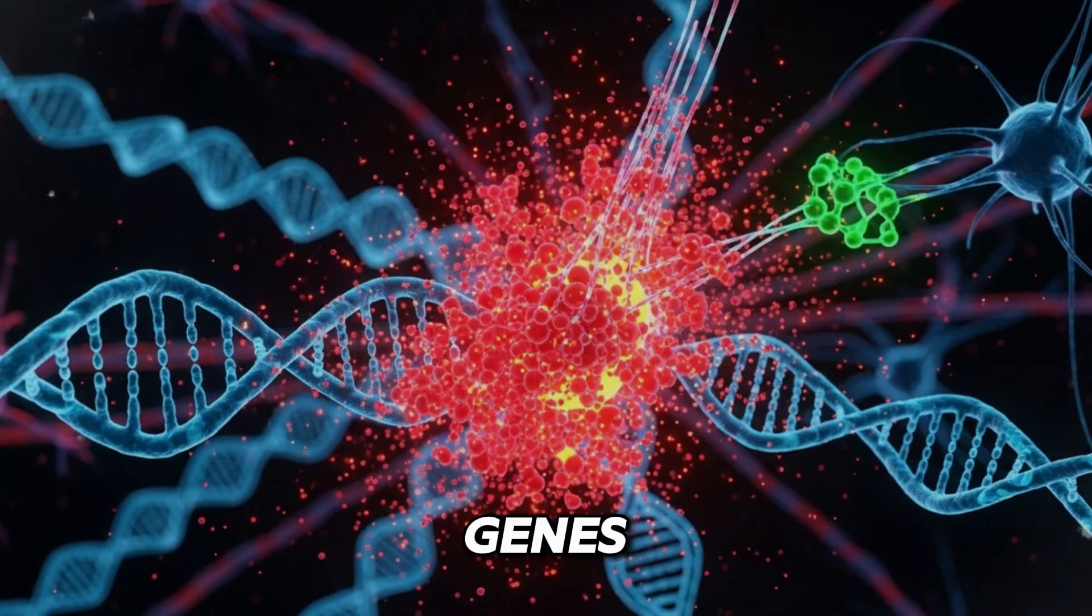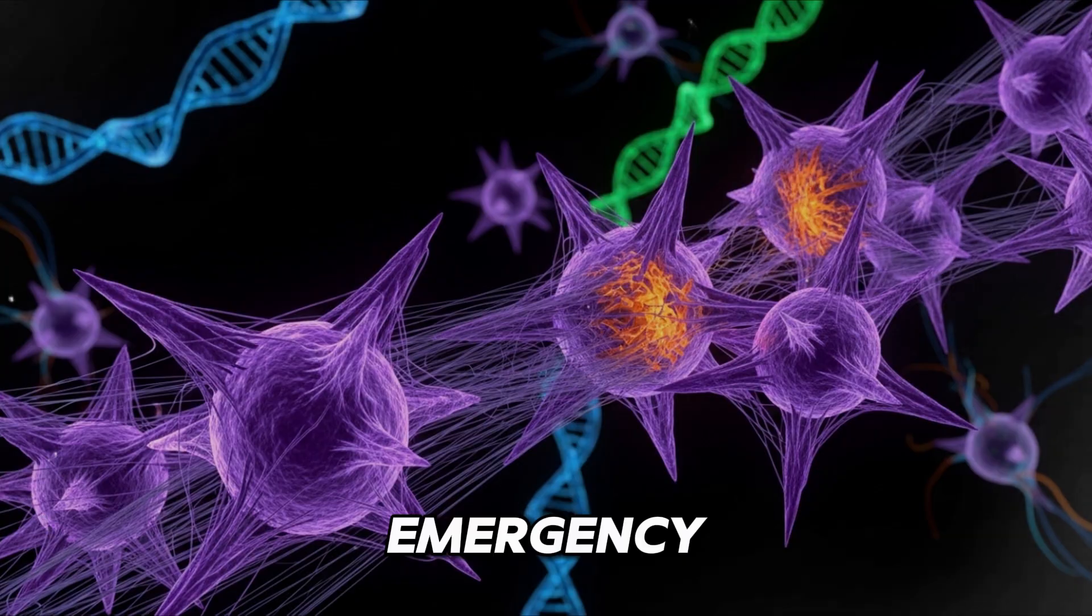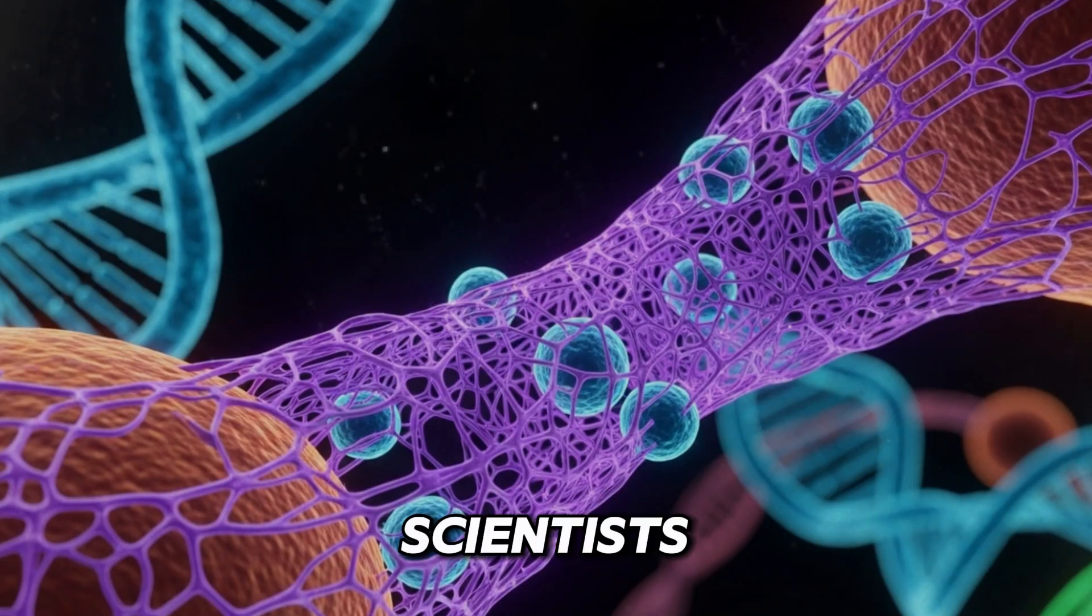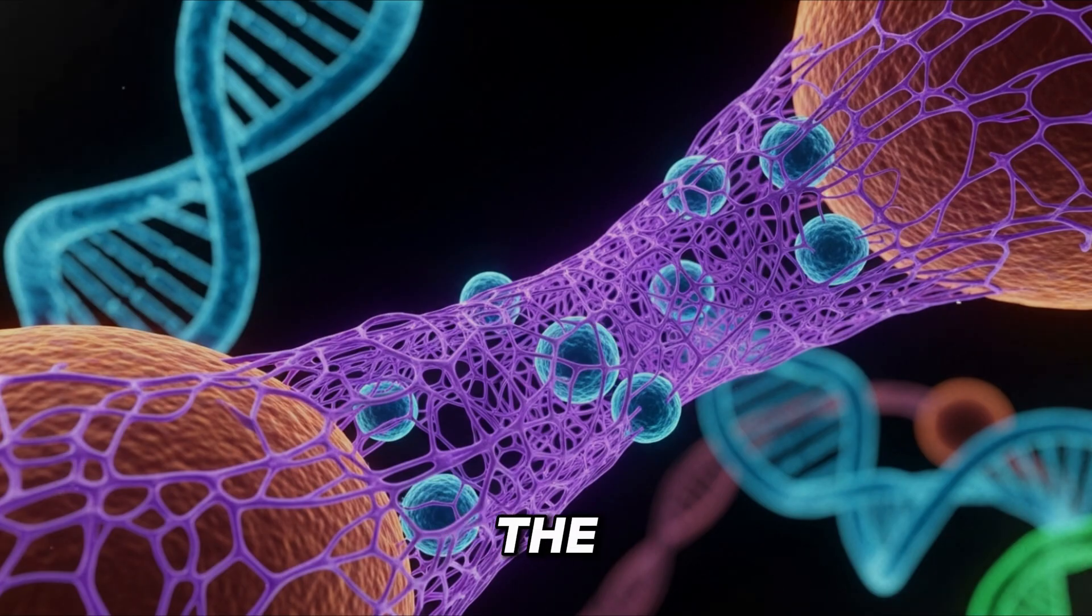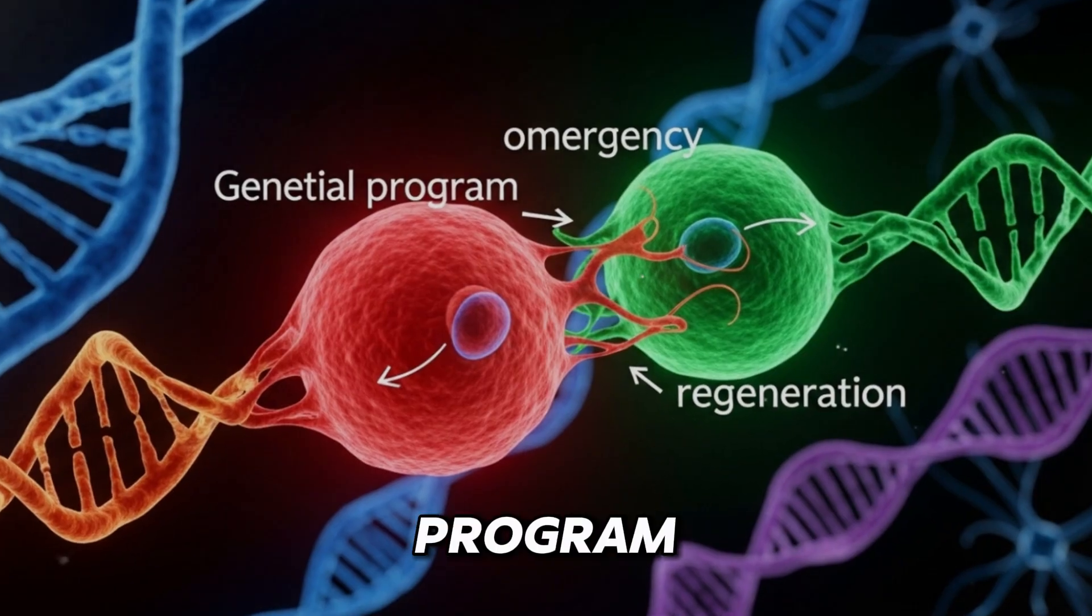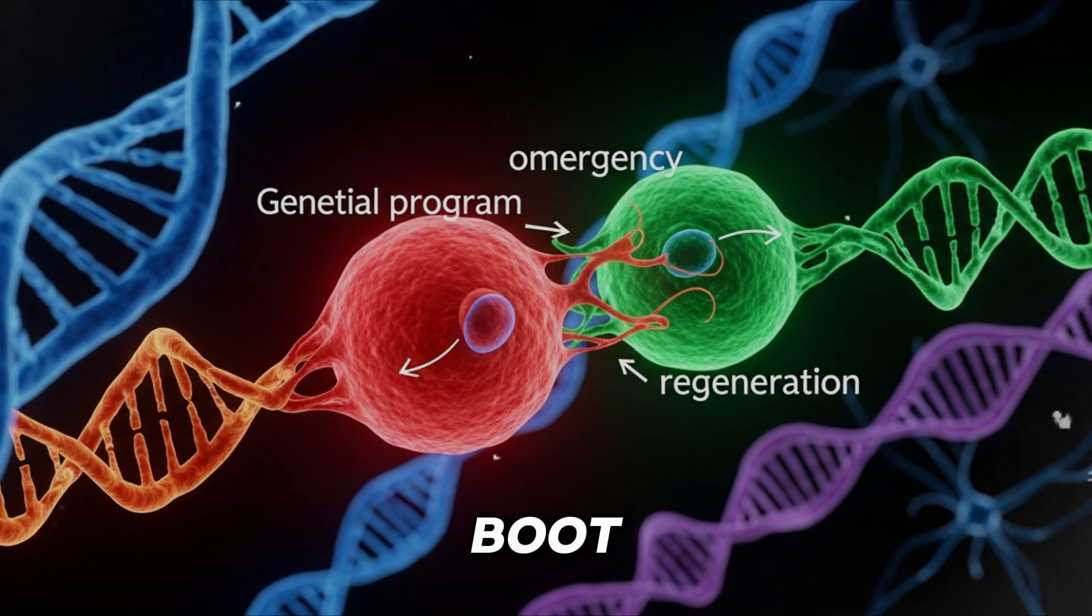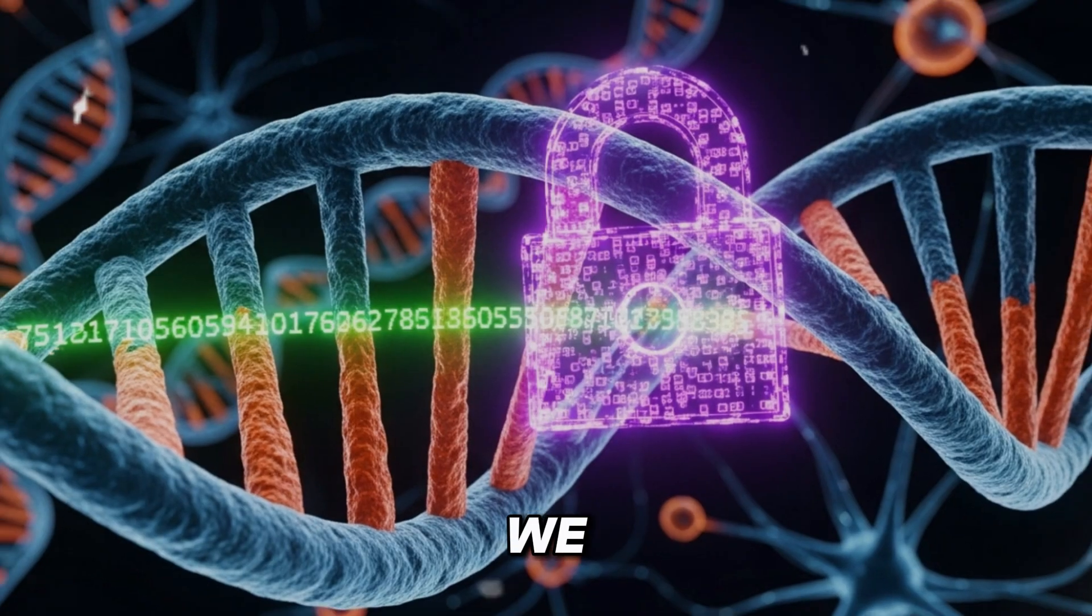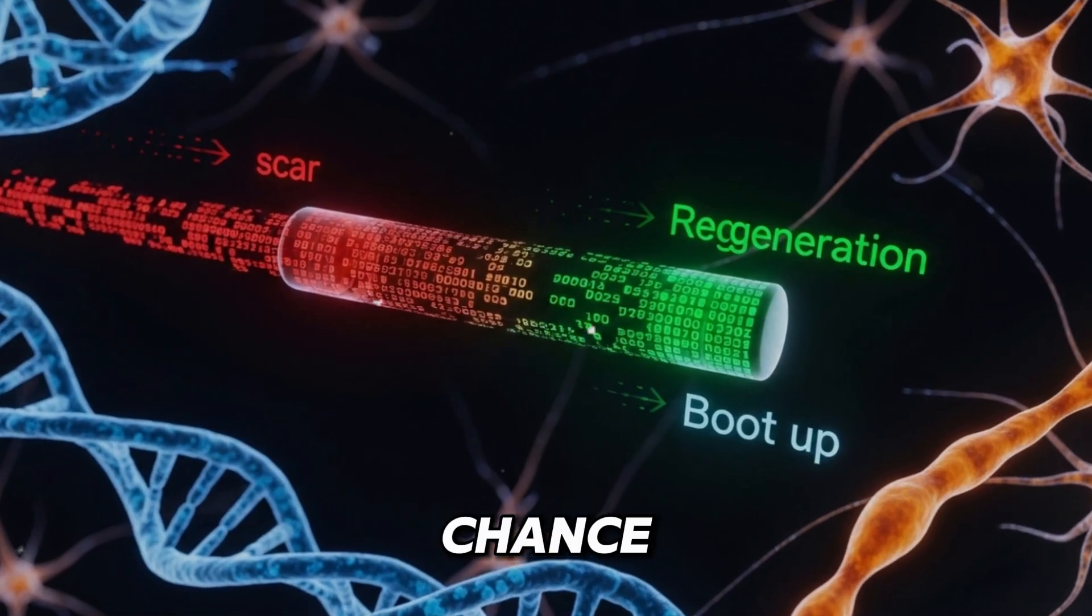This is the scarring hypothesis. We didn't lose the genes for regeneration. We evolved a new, dominant, emergency healing system that overrides it. The scar is the lock. For scientists, this was the eureka moment. The problem isn't that we are missing the code. The problem is that we can't access it. The scar program runs so fast, the regeneration program never gets a chance to boot up. So the hypothesis became simple. What if we could pause the scar just for a moment and give the salamander code a chance to run?